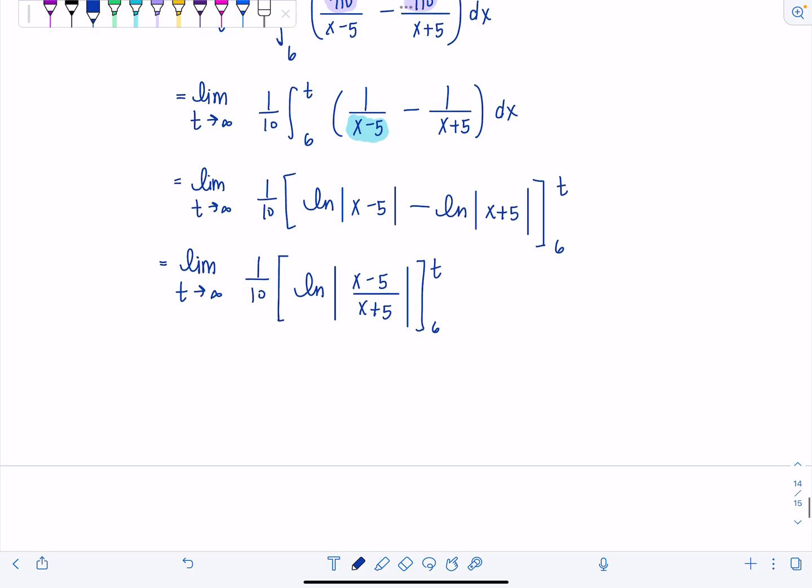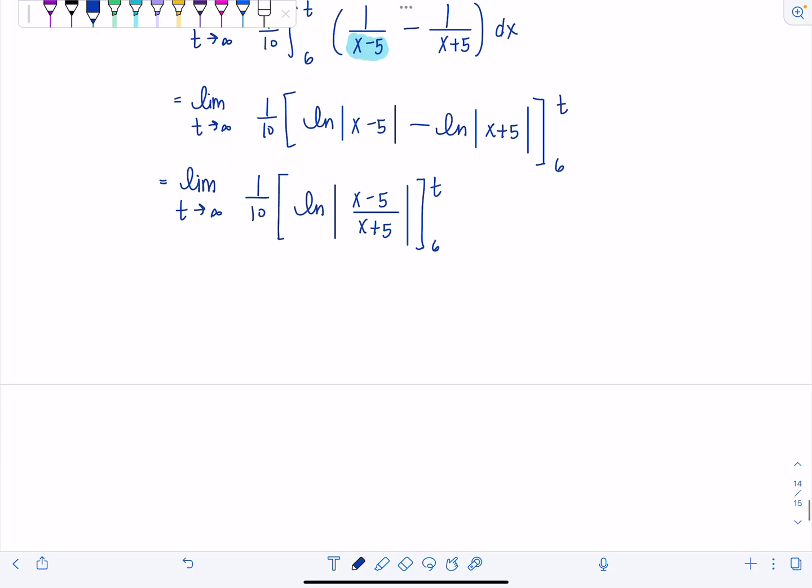You could do it now, you could do it later. I'd rather just get it done with now. So from here, let's see, we've got limit t approaches infinity, 1 tenth, we'll have natural log of absolute value t minus 5 over t plus 5, minus natural log absolute value 6 minus 5 over 6 plus 5.